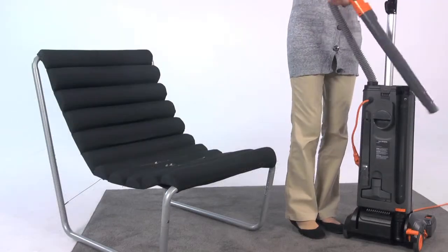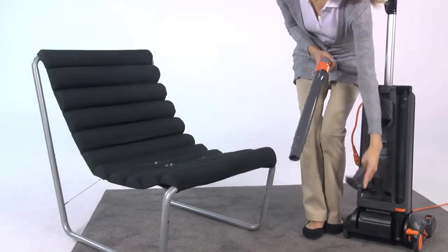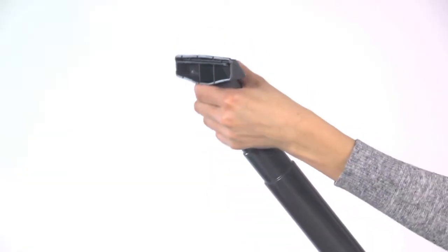Simply put the cleaner into the upright position, remove the combination hose, wand, and handle grip, and connect the desired tool attachment.